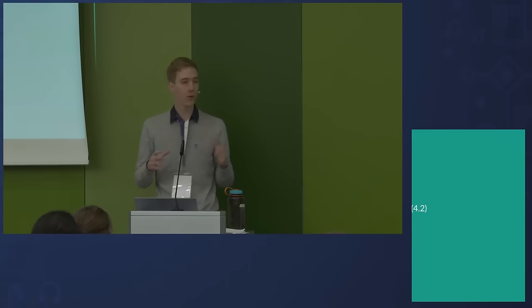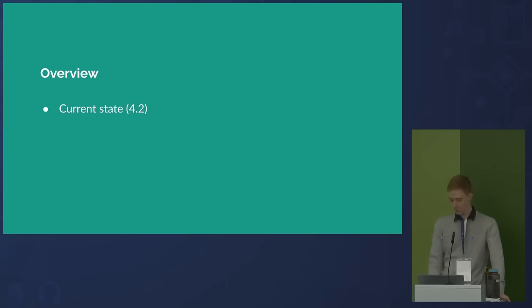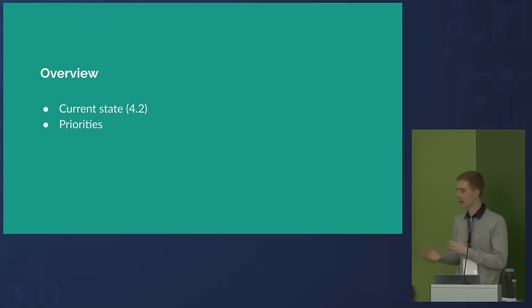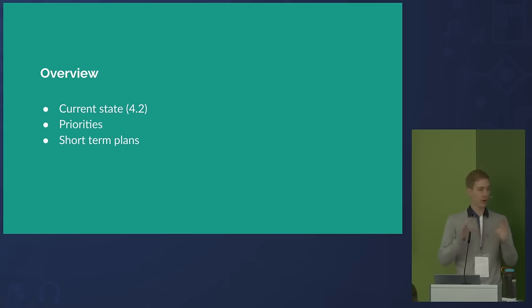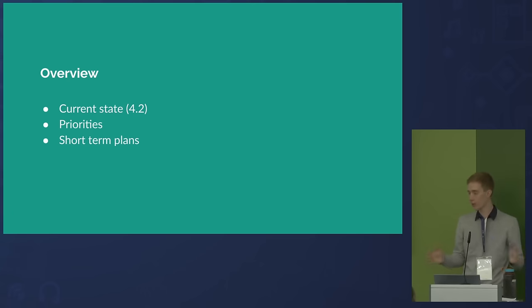Here's a little bit about what I'm going to talk about. First, the current state of things as of 4.2 — I want to introduce what's coming and the state of things. Then I want to talk about our priorities, how we decide what we're going to work on next, and how we deal with conflicting needs from the community. Then we'll cover short-term plans — things we're fairly certain we want in the engine, maybe in six months to a year.